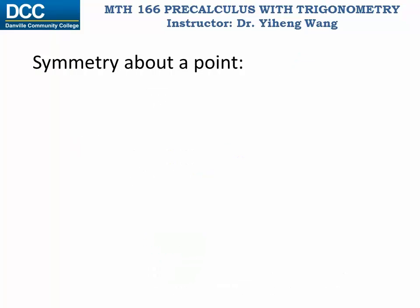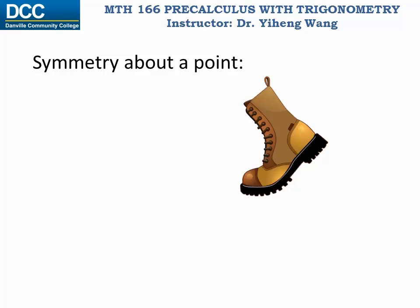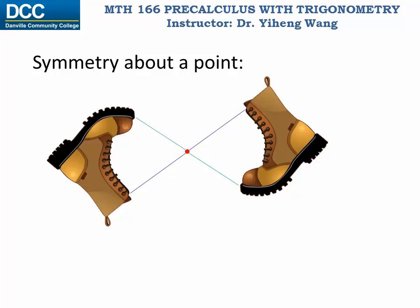Before we talk about the next kind of symmetry, let's introduce the concept of symmetry about a point, since many students might not be familiar with it. If we want to find the mirror image of an image about a point, imagine the image — a boot — is connected to the point by rigid strings. Now rotate the entire system about this point by 180 degrees. It doesn't matter if the rotation is clockwise or counterclockwise — you get the same image. These two boots are now mirror images about the red point, and the entire image is symmetric about that point.